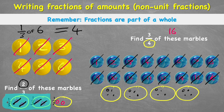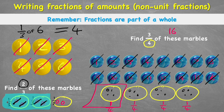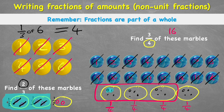Now I need to understand that each of these circles is one quarter. So to find out what three-quarters is, I can't just count one circle — I have to count three circles. And in these three circles I can count: one, two, three, four, five, six, seven, eight, nine, ten, eleven, twelve. So I have twelve marbles, meaning my answer to finding three-quarters of these marbles equals twelve.